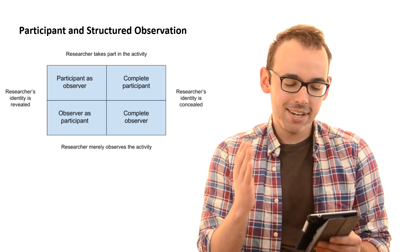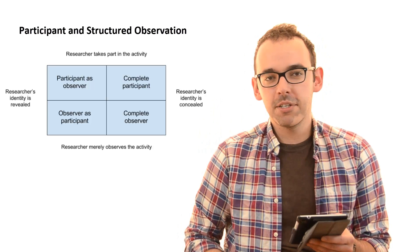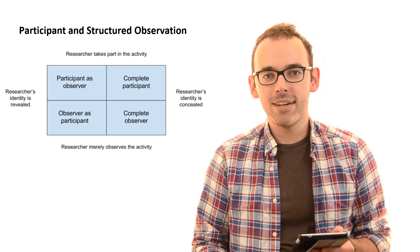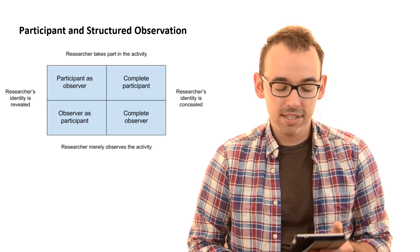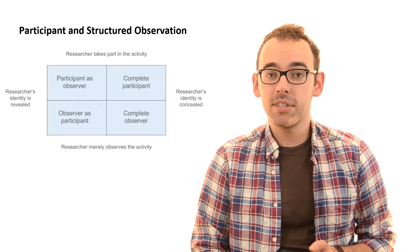Now the left half is about when the researcher's identity is revealed and the right half is when the researcher's identity is concealed. So let's start with the complete participant.